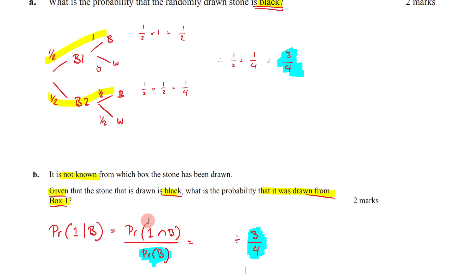And now, if I want to figure out what the probability of one intersection of B is, I'm going to come back up to this one. I might highlight this in green. I'm trying to figure out this. Well, what's that going to be? The probability of one intersection of B. Well, that's going to be this one right here. So the probability of one intersection of B, that means you've got box one and you're pulling out a black. So that's going to be a half.